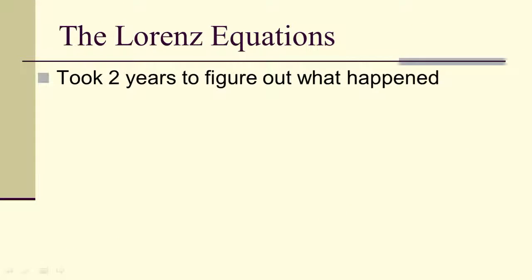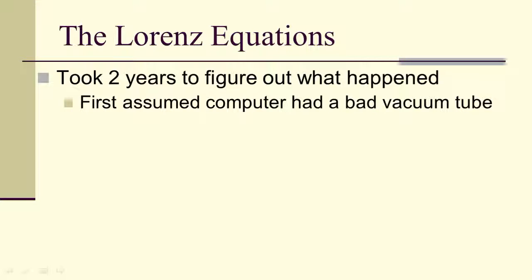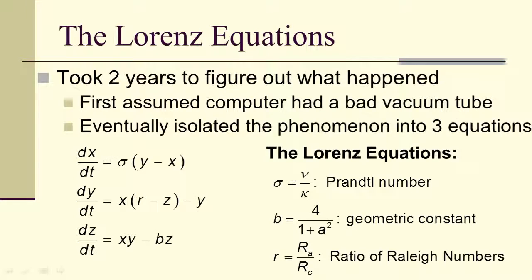He worked and worked, took a couple of years to figure out what happened. Of course, first assumed his computer had a bad vacuum tube. Eventually, isolated the phenomena into three equations. And so, these Lorenz equations is a system of three differential equations, which he created strictly to capture what happened when he saw this sensitive dependence on initial conditions.